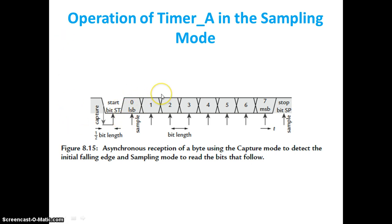One more thing about this communication protocol: the first bit transferred is the LSB (least significant bit) and the last bit is the MSB (most significant bit). Regarding which timer mode is used — in our previous discussion I mentioned that when we don't know the time period in advance, we put the system into continuous mode. Here in sampling mode we also operate in continuous mode.